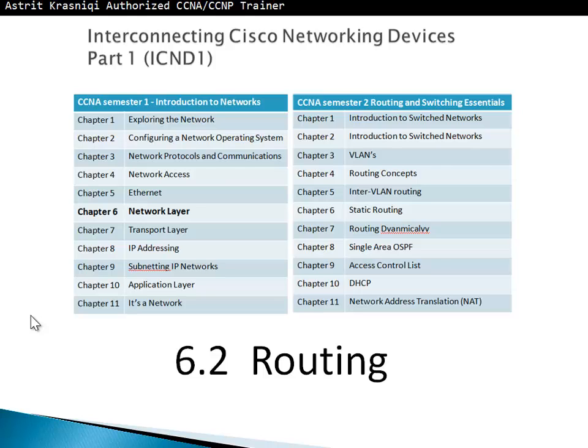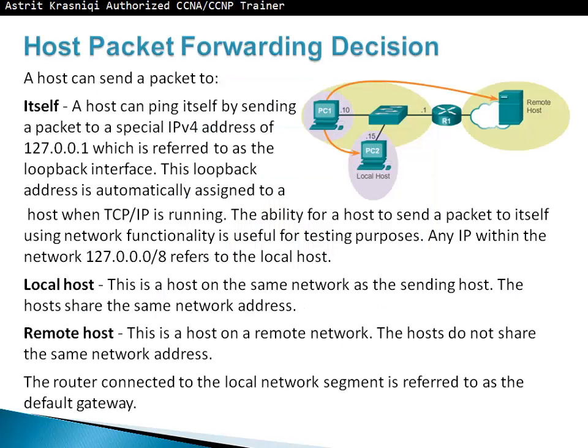We'll continue with section 6.2 of chapter 6, network layer. Now, host packet forwarding decision. A host can send a packet to itself — local host — or remote host. When it's sending a packet to itself, a host is using the special reserved IPv4 address 127.0.0.1, which is referred to as a loopback interface.